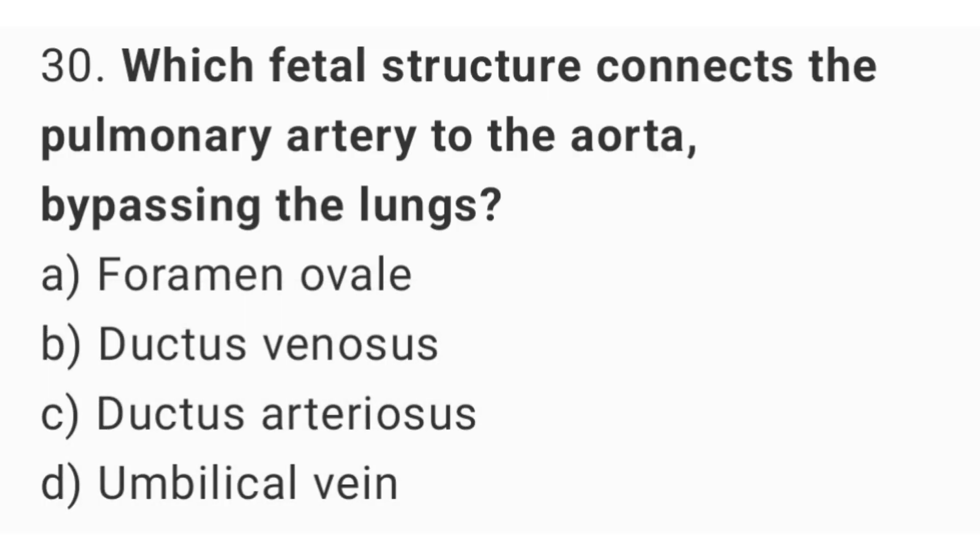Question number thirty: which fetal structure connects the pulmonary artery to the aorta, bypassing the lungs? The right answer is option C, ductus arteriosus.